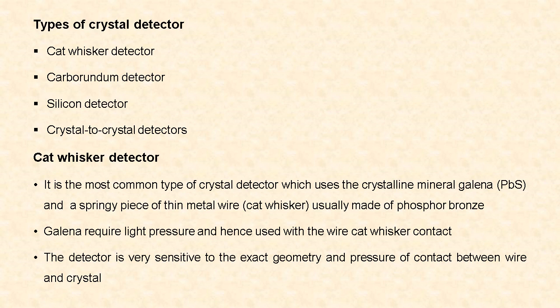The cat whisker detector is the commonly used crystal detector. It uses the crystal mineral galena — that is lead sulfide — and a piece of thin metal wire called the cat whisker, which was usually made of phosphor bronze. The crystal galena requires only light pressure and hence it was used with the wire cat whisker contact. This detector was very sensitive to the exact geometry and pressure of contact between the wire and the crystal.